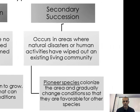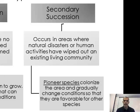Then we have secondary succession. This occurs in areas where natural disasters or human activities have wiped out an existing living community. We had a land formation, living organisms went through the process and formed an ecosystem, then something wiped them out. Pioneer species come back in — the same type of species — and create the environment to be favorable for less hardy organisms to come in.